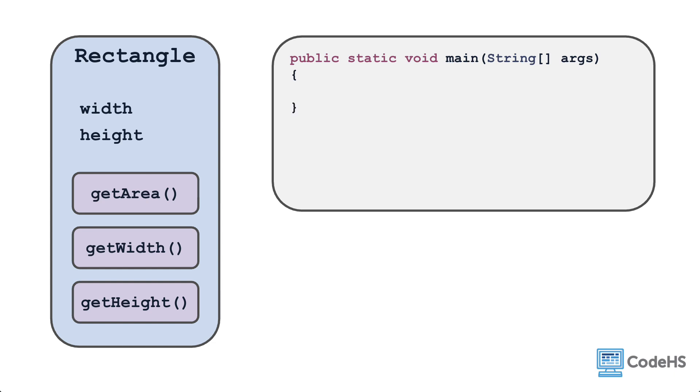Sticking with the Rectangle class, let's create a new rectangle object in the main method. To do this, you'll write rectangle rect1 equals new rectangle parentheses 4 comma 7. You've seen similar syntax in previous lessons when creating scanner objects, but let's talk about each piece here.